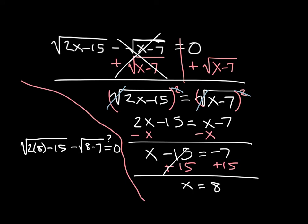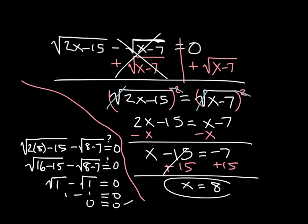Okay, we'll simplify. This will be the square root of 2 times 8 is 16 minus 15, minus the square root of 8 minus 7. Again, does that equal 0? Well, 16 minus 15 is 1, minus 8 minus 7 is 1. Does that equal 0? Well, sure. Square root of 1 minus square root of 1 is 1 minus 1, which does, in fact, equal 0. So it checks out. X equals 8 is our solution.